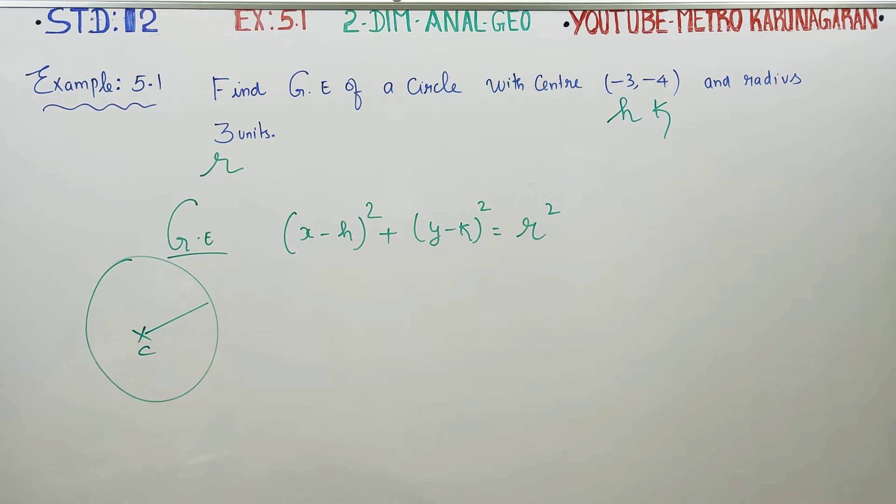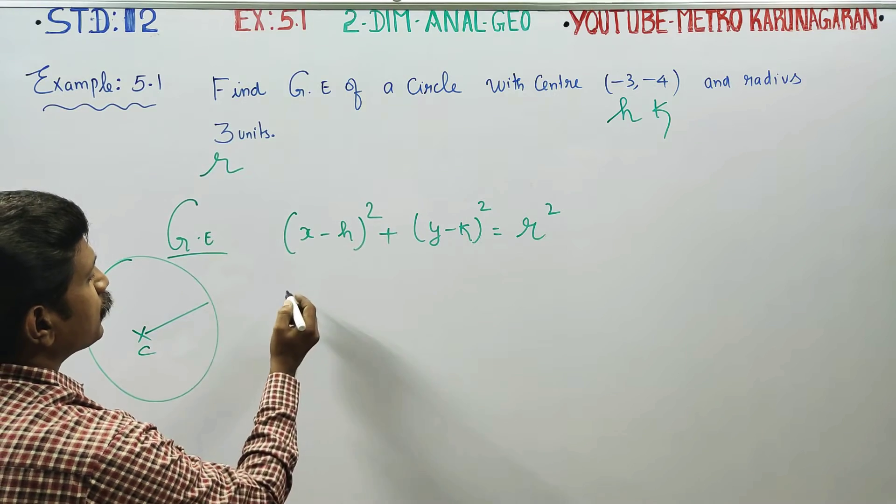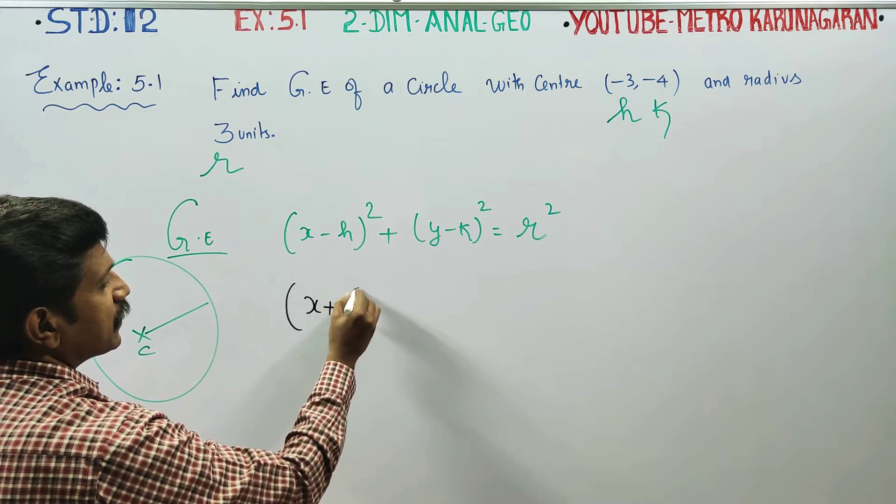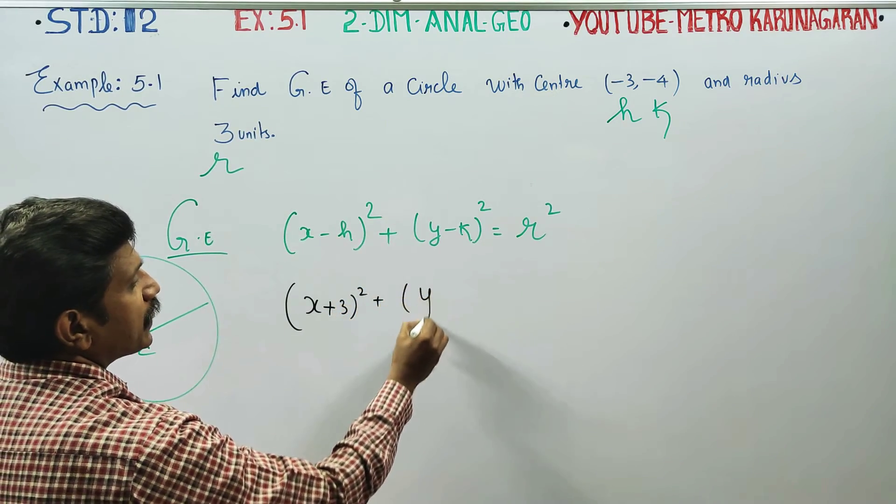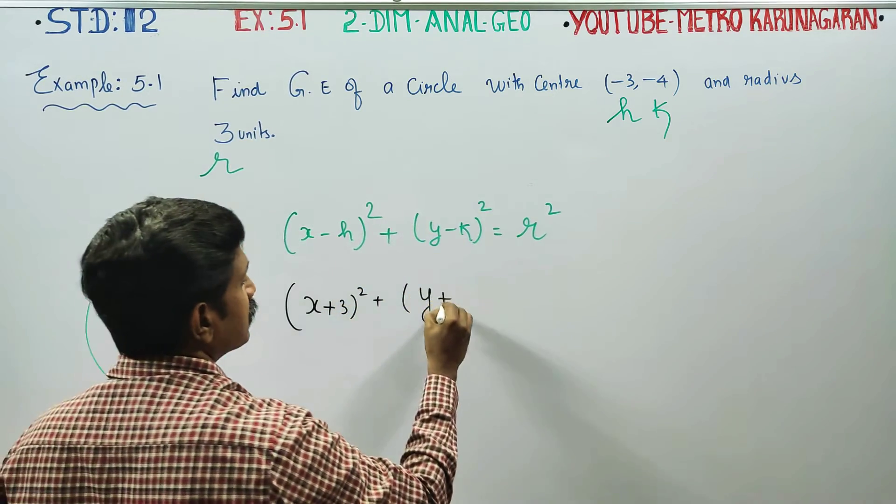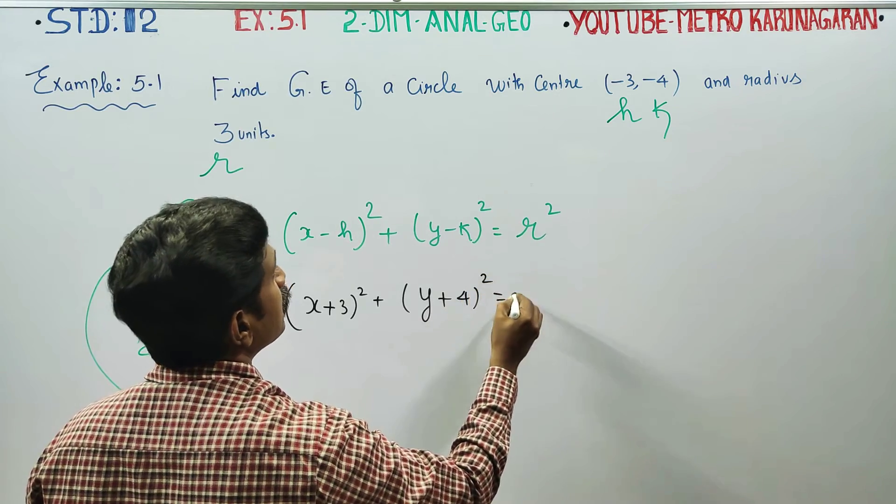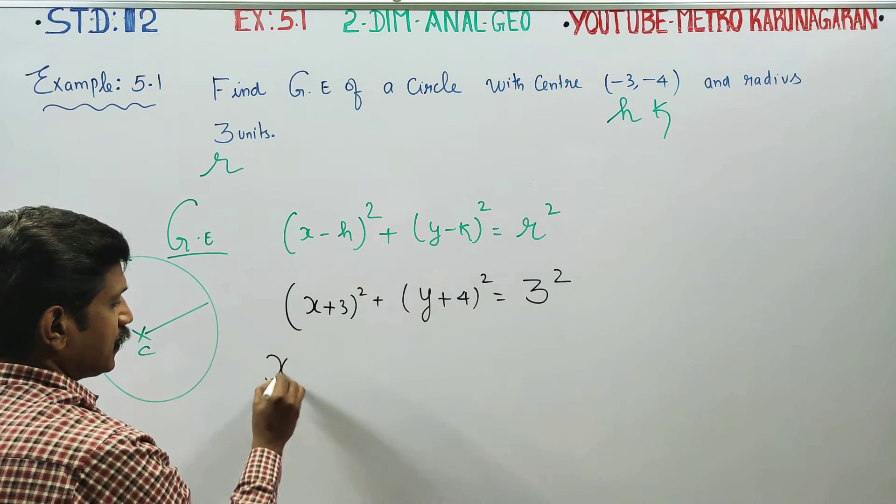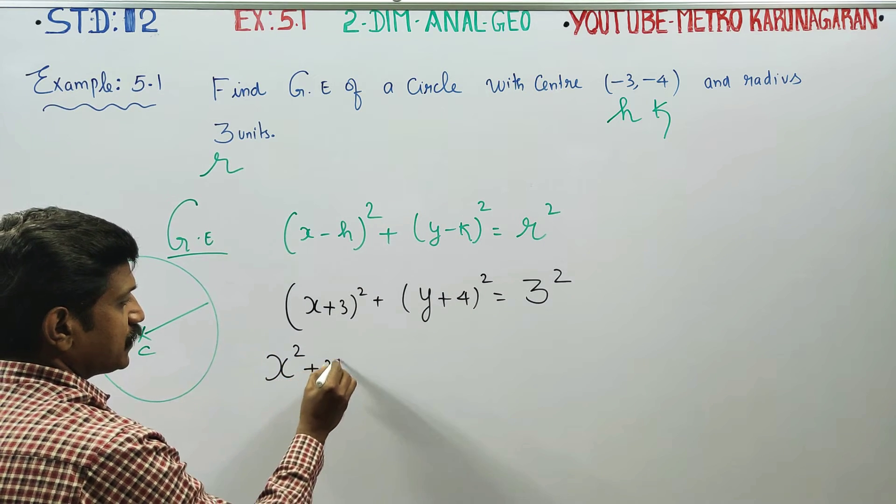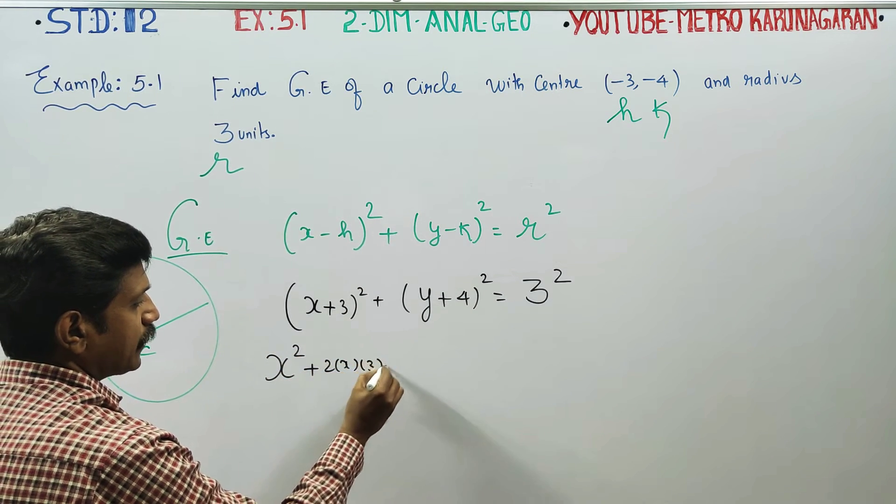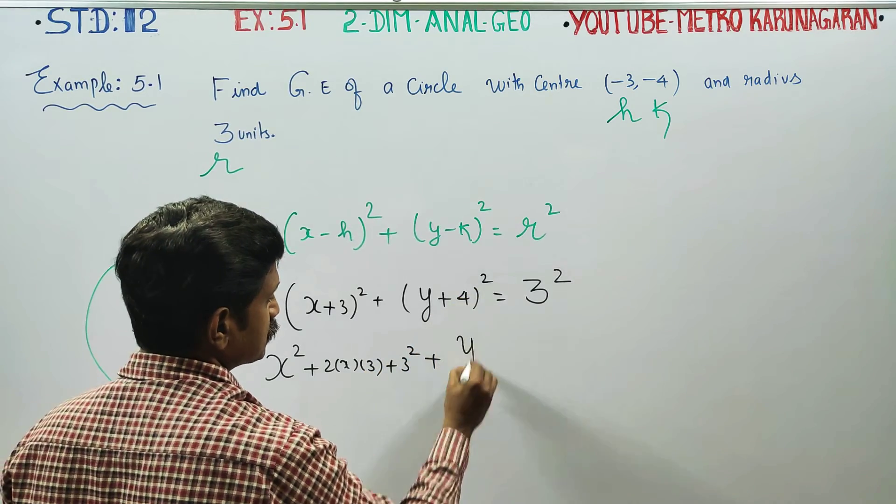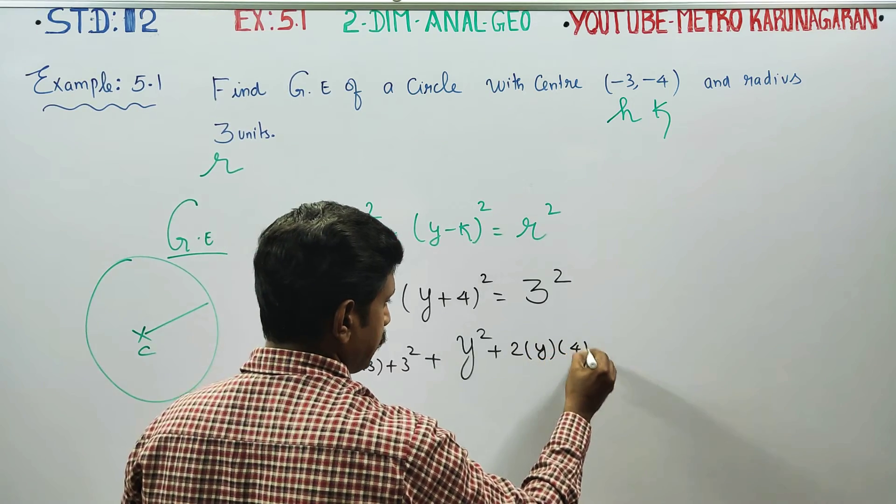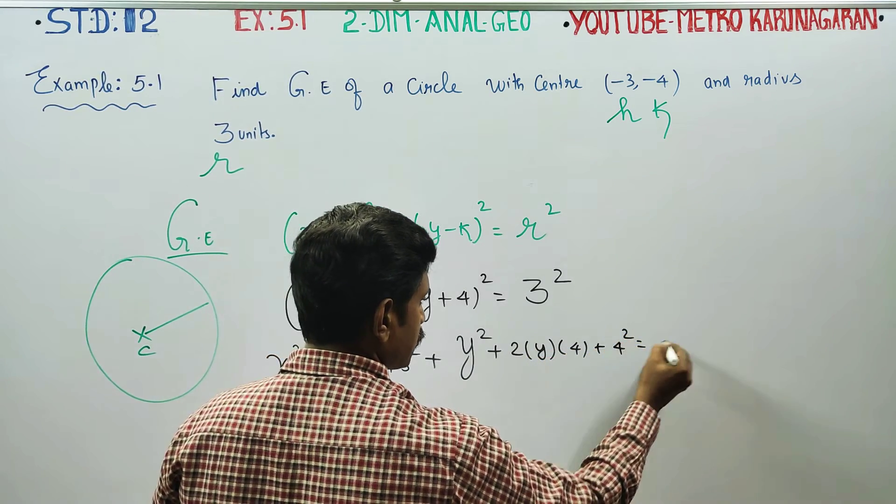Now substitute H, K, and radius. This formula is (a + b)² = a² + 2ab + b². Again, using the (a + b)² formula: (x + 3)² + (y + 4)² = 9, which expands to x² + 6x + 9 + y² + 8y + 16 = 9.